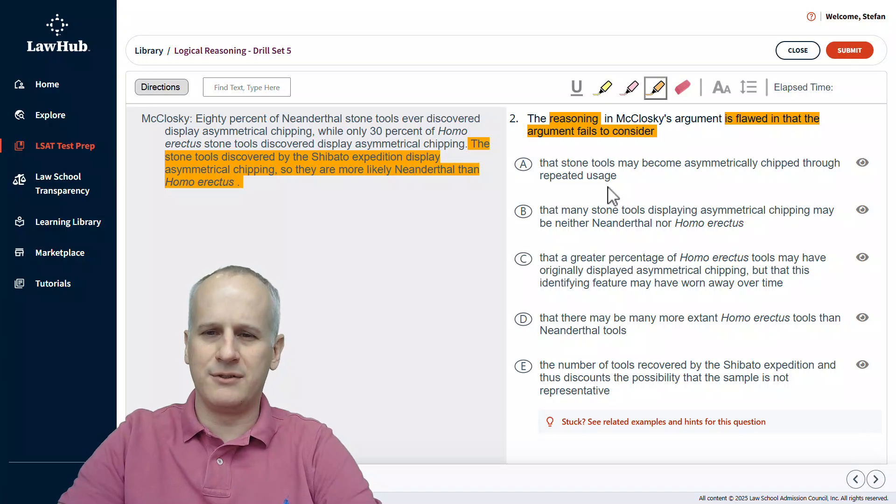We don't care how they become asymmetrically chipped, so I highlight that. We eliminate choice A. That needs additional information almost immediately.